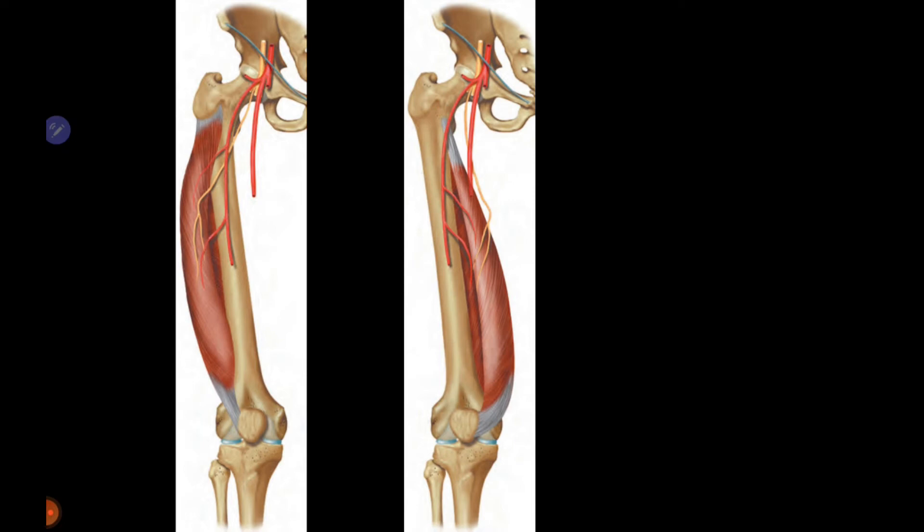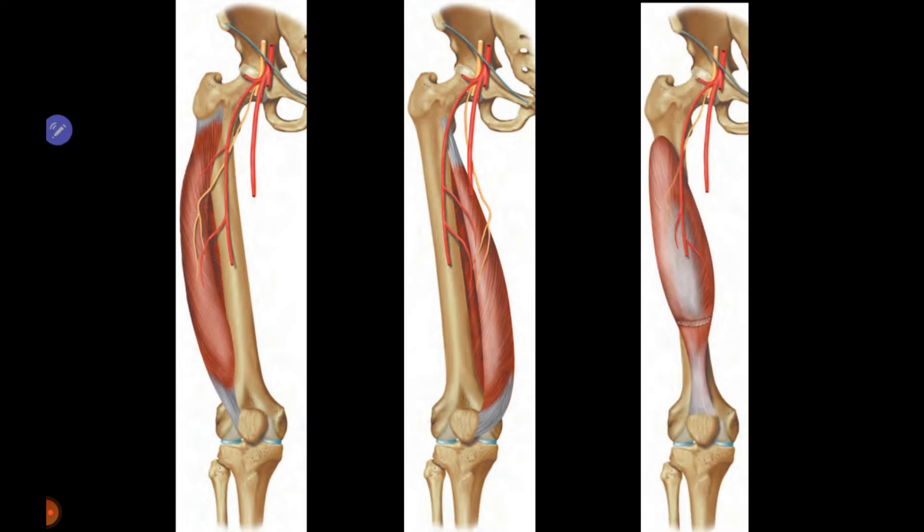The other quadriceps femoris muscles are vastus lateralis, vastus medialis, and vastus intermedius. All these muscles arise from the femur and insert over the patella by forming a conjoined tendon with rectus femoris, and together they form the quadriceps tendon.